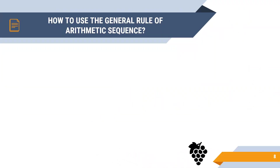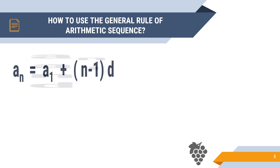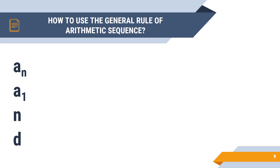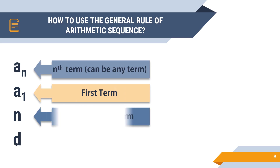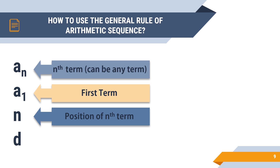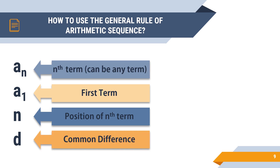So now, how do we use the general rule a_n = a₁ + (n − 1)d? First, identify the variables: a_n is the nth term (it can be any term); a₁ is the first term; n is the position of the nth term; and d is the common difference.